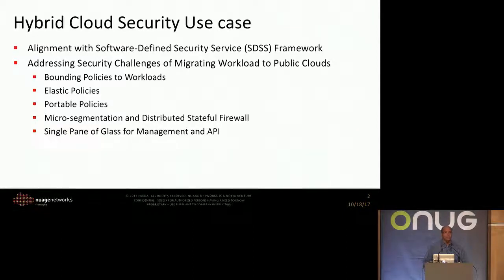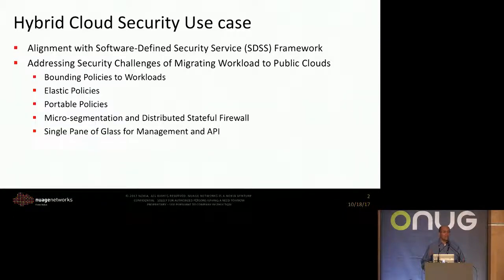Most customers want to go to public cloud — AWS, Azure — but they have concerns on how they can address security. The policies most of the time are tied to an IP address or a subnet. They are not portable, they are not elastic. If you bring up hundreds or thousands of containers and VMs, the policies will not scale with you. You have to go and reconfigure your policies again, which is a pain.